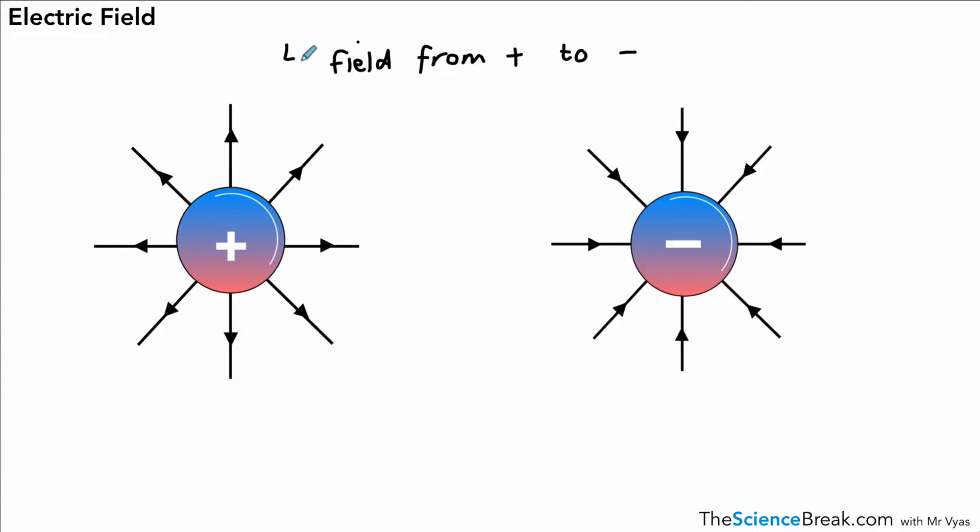So away from the positive and towards the negative. And the second thing that's quite important is that the electric field is strongest nearer to the object. So the field is strongest near the objects - that red highlight there, that's where the electric field is strongest, closest to the object.